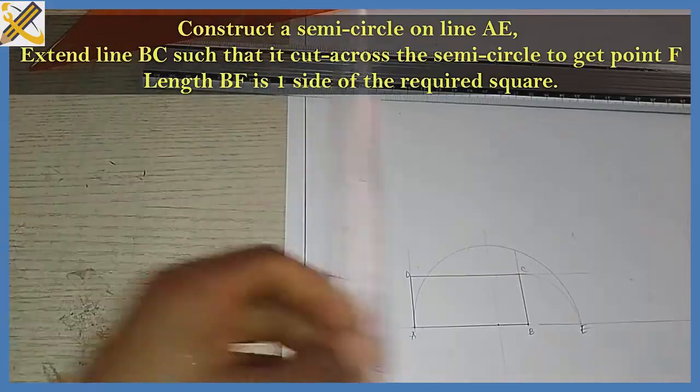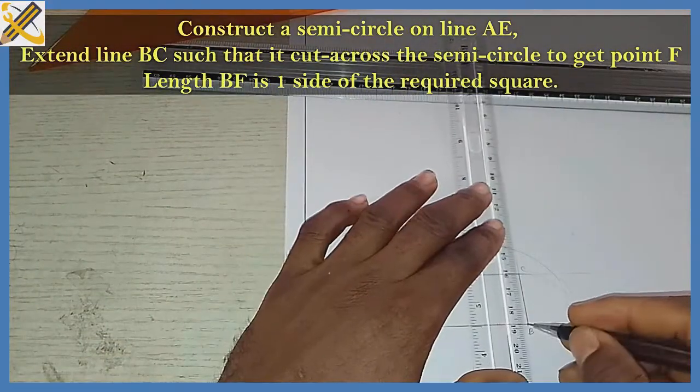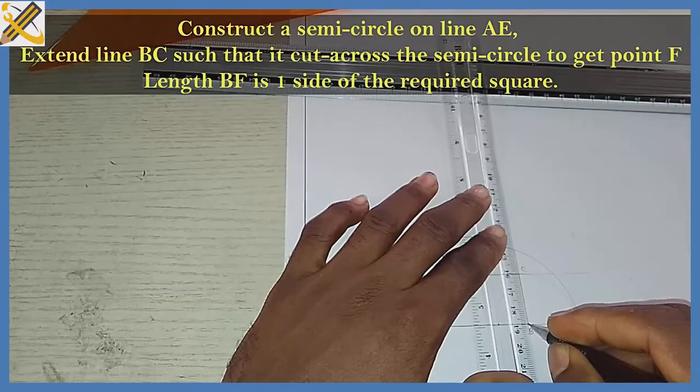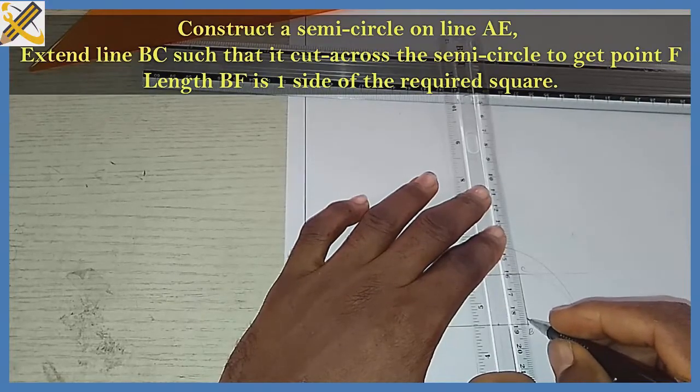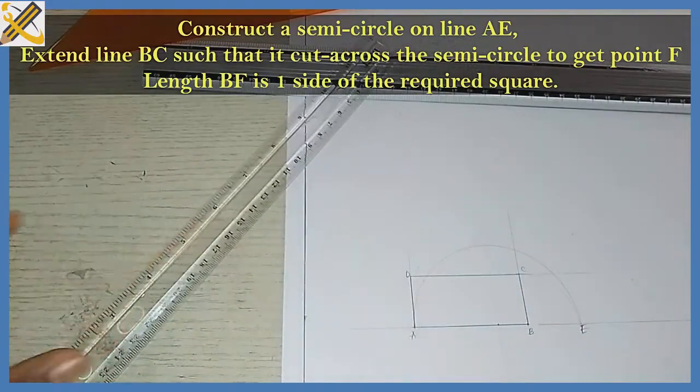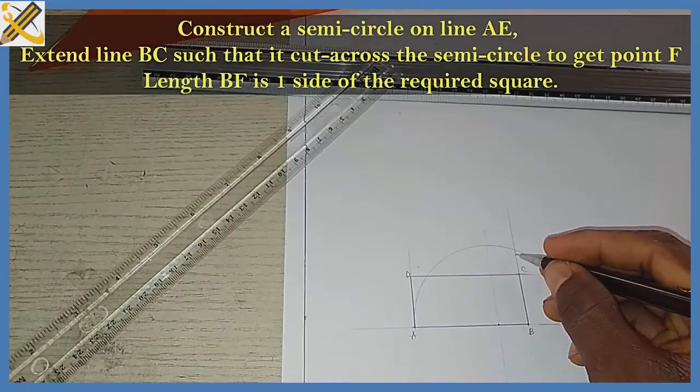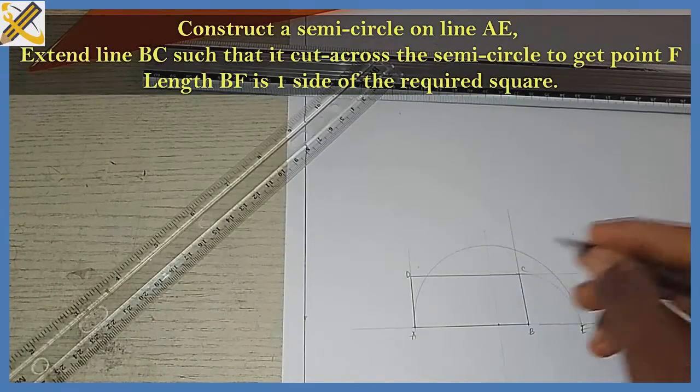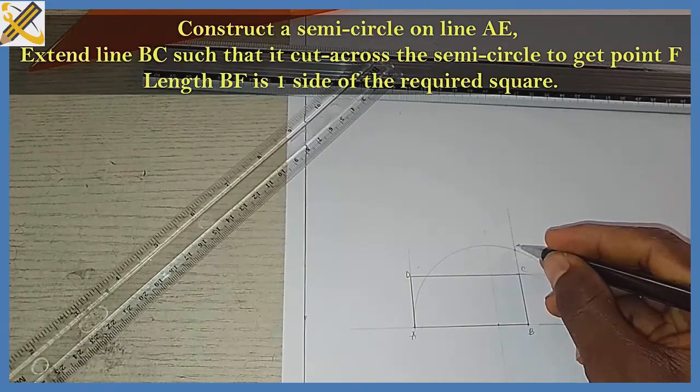After erecting that semicircle, I am going to extend line BC such that it goes through the semicircle on AE. Wherever the extension touches the semicircle, name it point F.